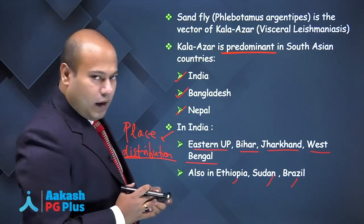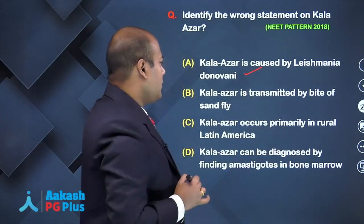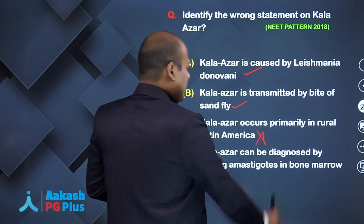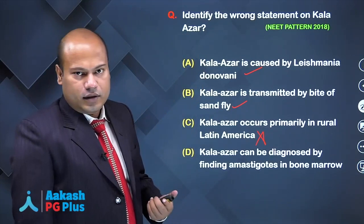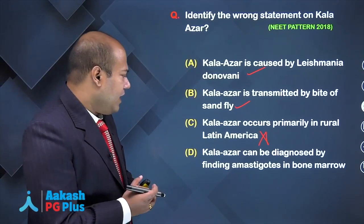Coming back to the question — identify the wrong statement on Kalazar. Option A: Kalazar is caused by Leishmania Donovani — correct. Option B: Kalazar is transmitted by the bite of sandfly — correct. Option C: Kalazar occurs primarily in rural Latin America — wrong, because Kalazar predominantly occurs in Southeast Asian countries. Option D: Kalazar can be diagnosed by finding amastigotes in the bone marrow — correct.